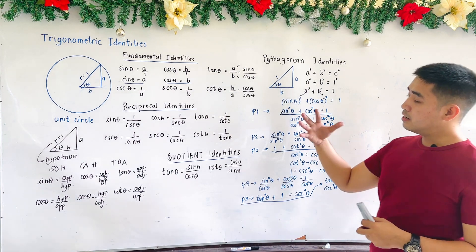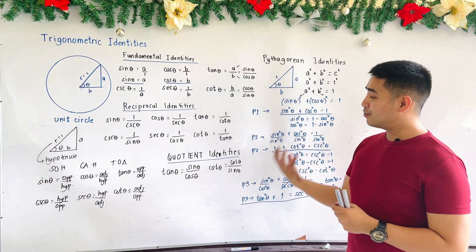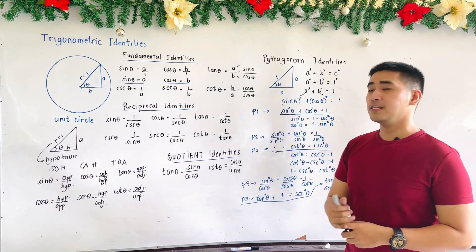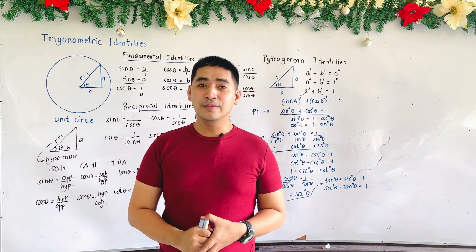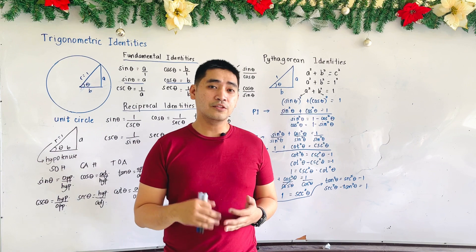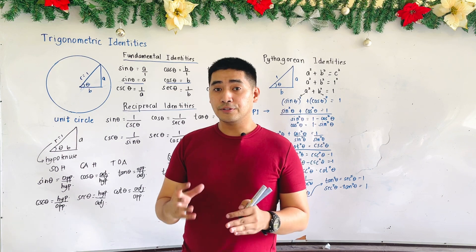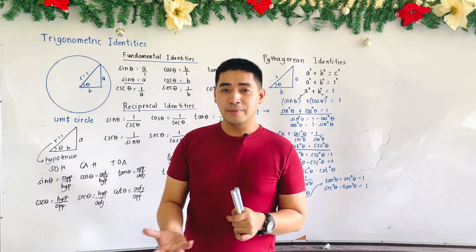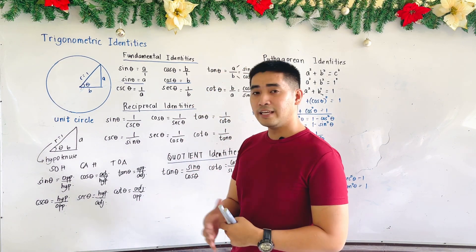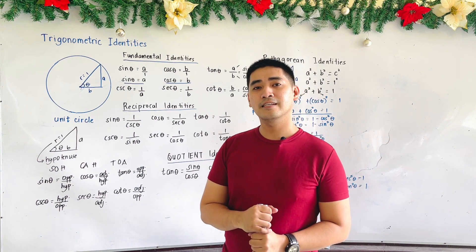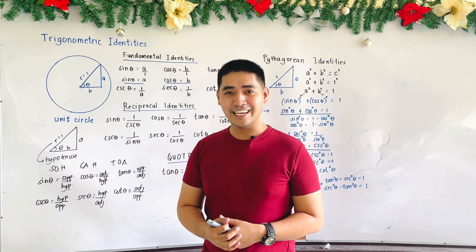So these are the different trigonometric identities — from fundamental identities, to reciprocal identities, to quotient identities, to Pythagorean identities. It is very easy to derive these identities: just remember the unit circle, that there will be a triangle from the unit circle, and that triangle is used to derive all the trigonometric identities. I am Engineer Jod Edward Hernandez saying that mathematics is always fun. Goodbye, and God bless.